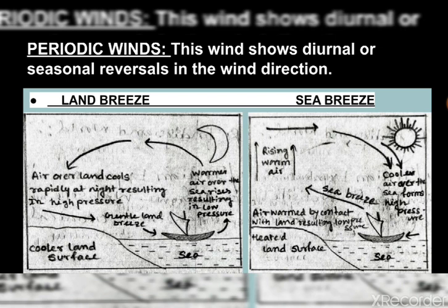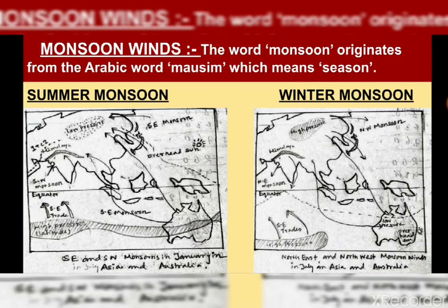When the sun sets, the land cools down faster while water takes longer to cool down. High pressure is created over the land. Since the water over the sea is warm, the air above the sea gets heated and rises. The cool land breeze then blows out towards the sea — that is what we call land breeze. This diagram you need to learn.